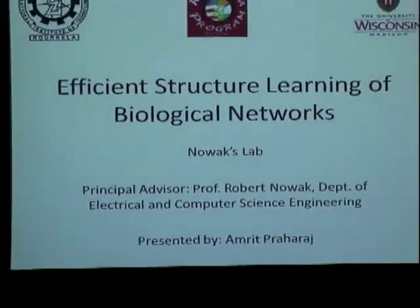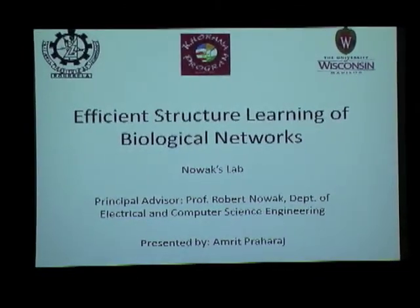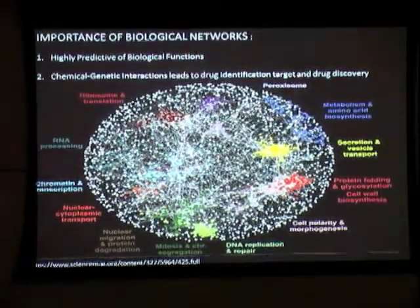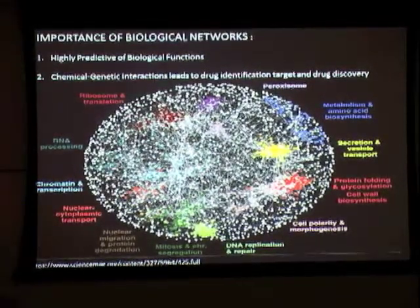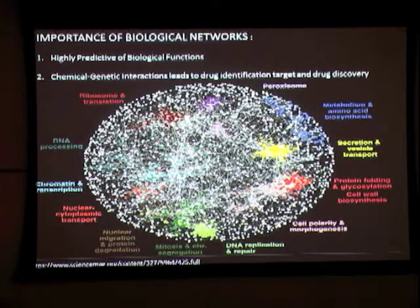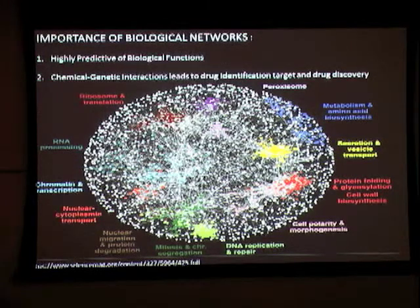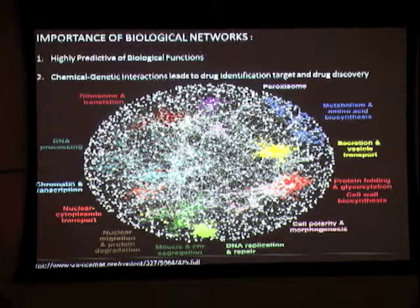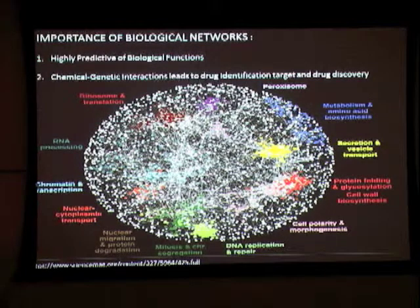The title of my project is Efficient Structured Learning of Biological Networks. I will show you a picture of a biological network — this is how a biological network looks like. It's a gene-generating network of yeast. The genes that have similar functions are clustered together, and the different colors correspond to different functions. From these clusters, we can say which gene has which function — so it gives high probability of biological functions. From chemical-gene interactions, it can be known which chemical creates hypersensitivity in which cluster, leading to the identification of a drug or chemical target, and hence drug discovery.